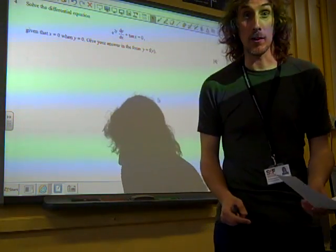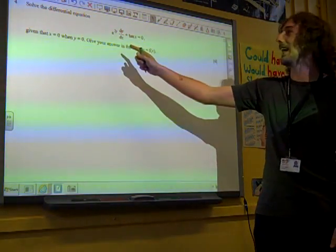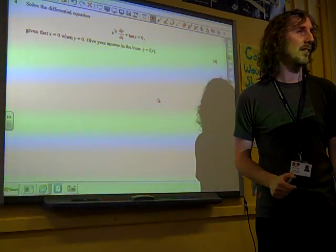So, question four, the differential equations question. Solve the differential equation, e to the 2y divided by dx plus tan x is 0.